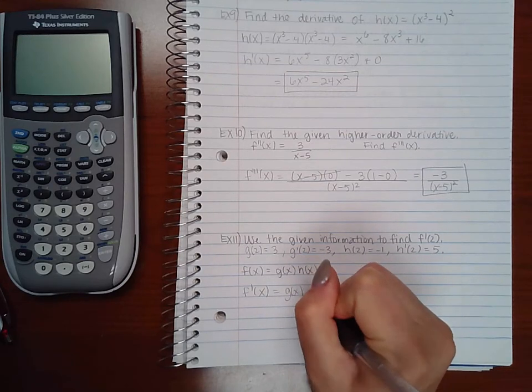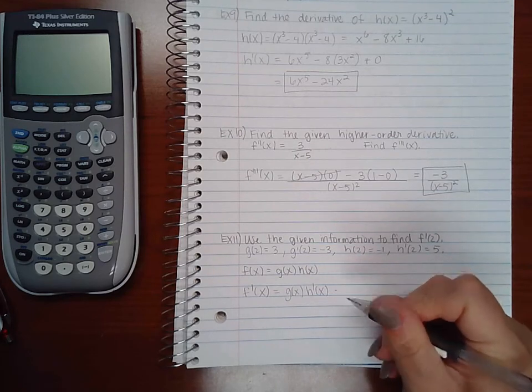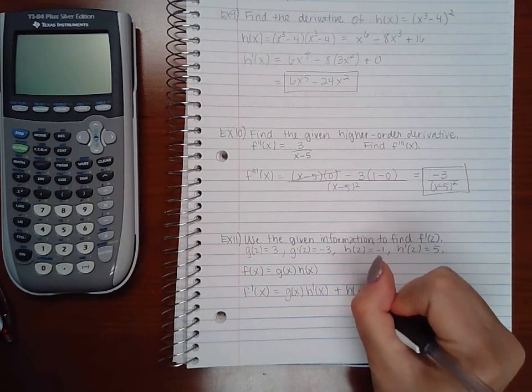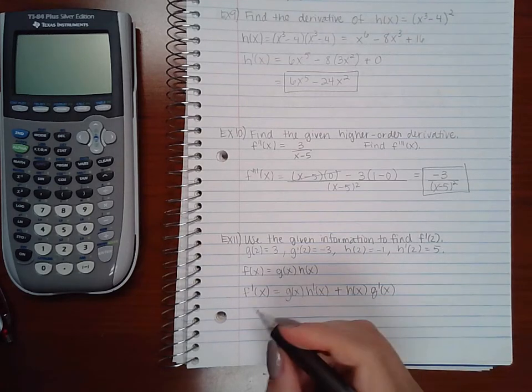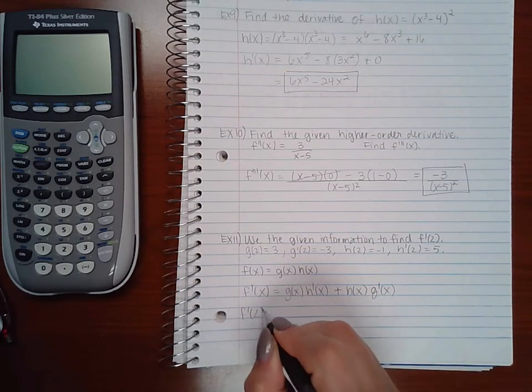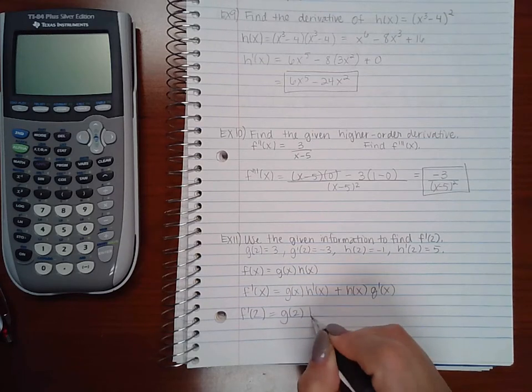So the first function times the derivative of the second function plus the second function times the derivative of the first function. And if I want to know what f prime of 2 is, then that means I need to plug in 2 for all the x's.